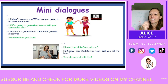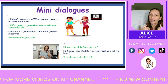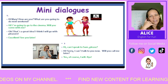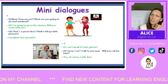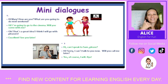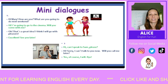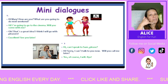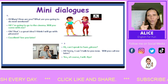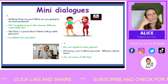Dialogue number two. First I will read the whole dialogue, then I will read green and you will read blue. 'Hi, can I speak to Sam, please?' 'Hi, sorry, I can't talk to you now. Will you call me back later?' 'Yes, of course I will. Bye.' Let's try again — I will say the green part and you will say the blue part.